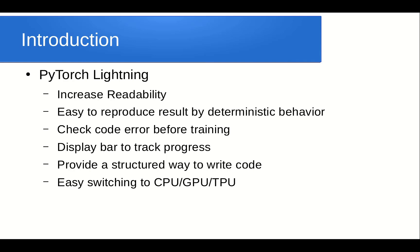PyTorch Lightning makes it easy to reproduce results through deterministic behavior. It checks for code errors before training using a sanity check, which validates the validation data first. It provides a progress bar to track training, a structured way to write code, and easy switching between CPU, GPU, or TPU. It also provides state-of-the-art functionality such as mixed precision and stochastic weighted averaging. PyTorch Lightning is essentially a wrapper around PyTorch that provides significantly more functionality.